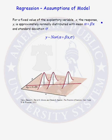For a fixed value of the explanatory variable x, the response y is approximately normally distributed with mean alpha plus beta x and standard deviation sigma. In notation, y is normally distributed with mean alpha plus beta x and standard deviation sigma.